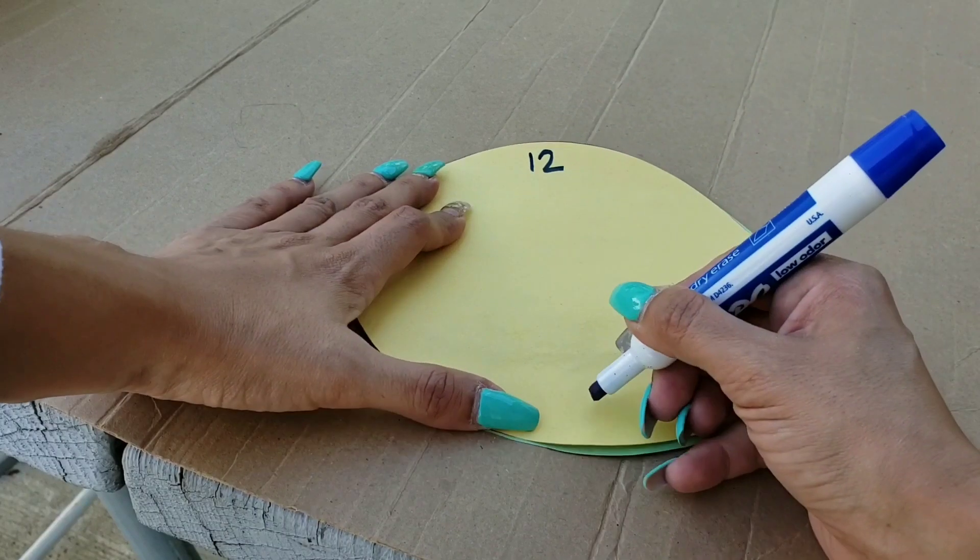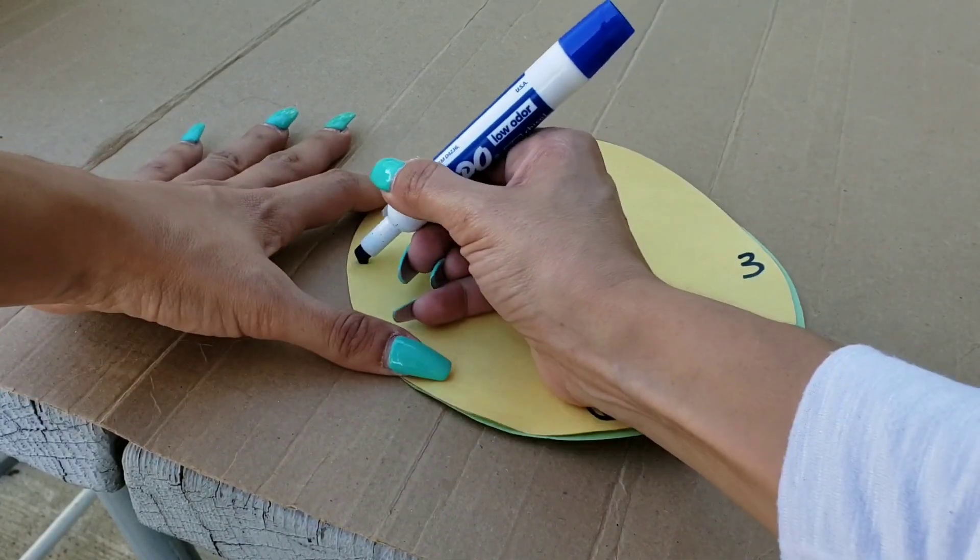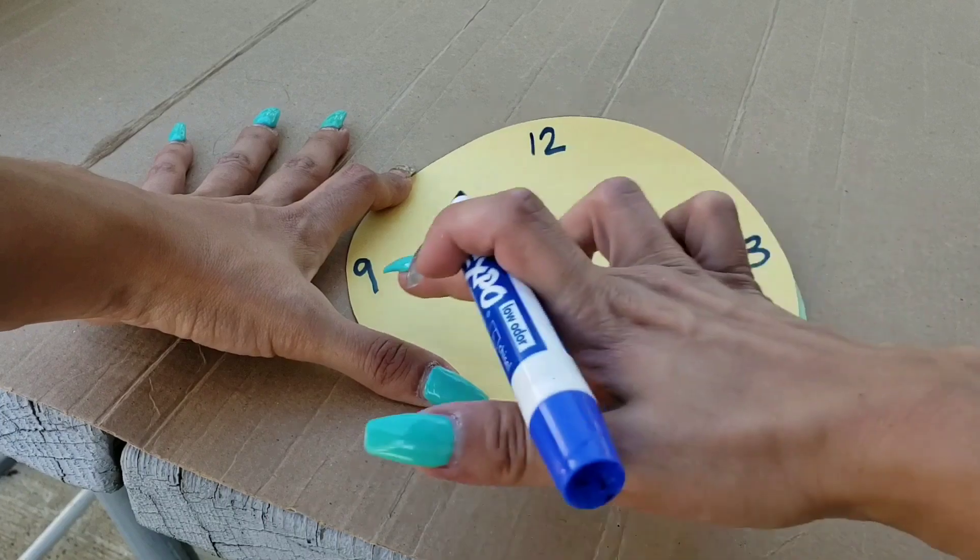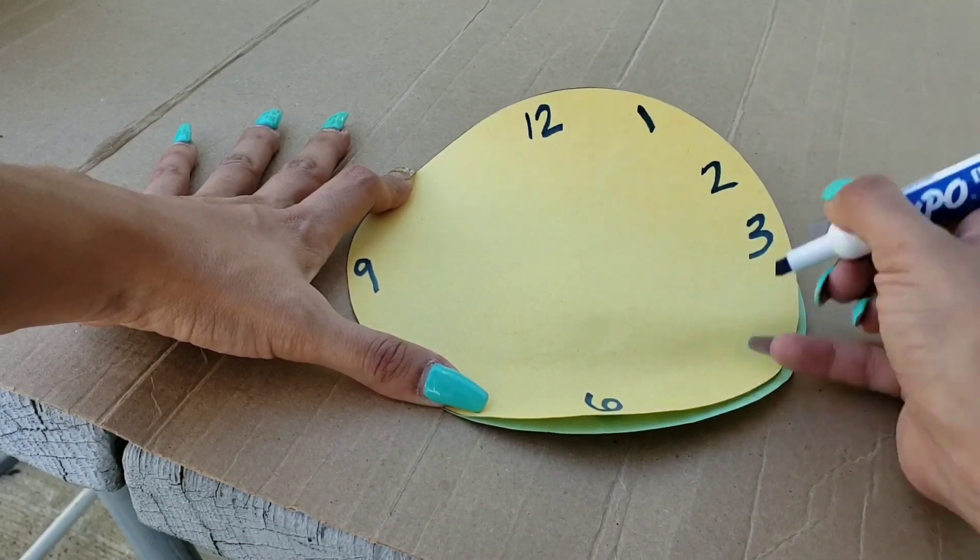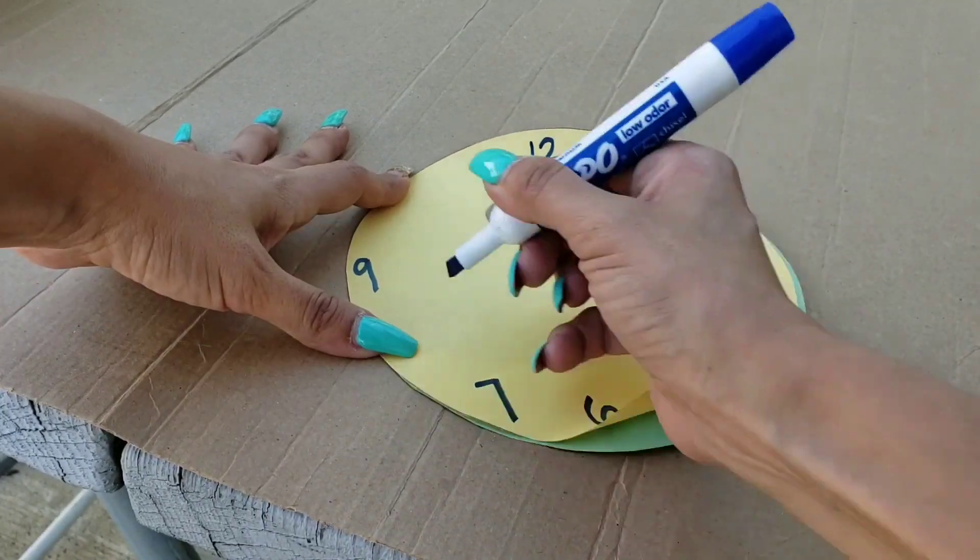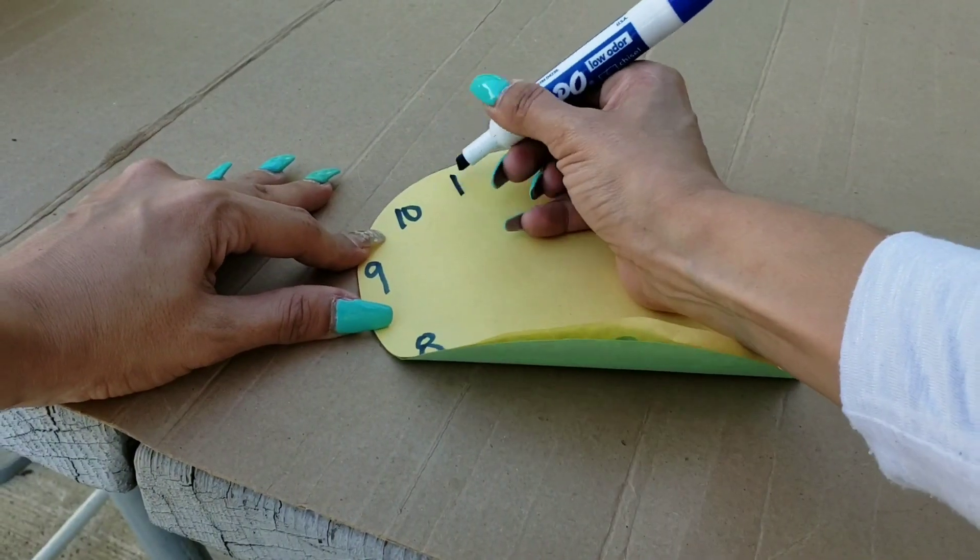Start placing the numbers, the 12 at the top, 6 at the bottom and 3 and 9. It's very important that you put the numbers correctly. Then fill in the numbers that remain.